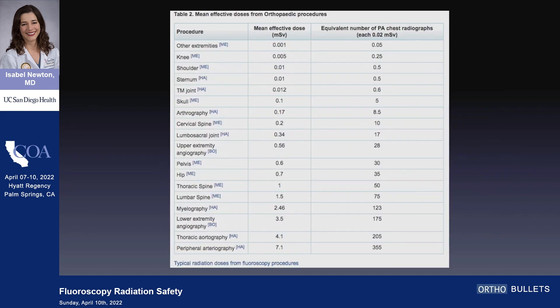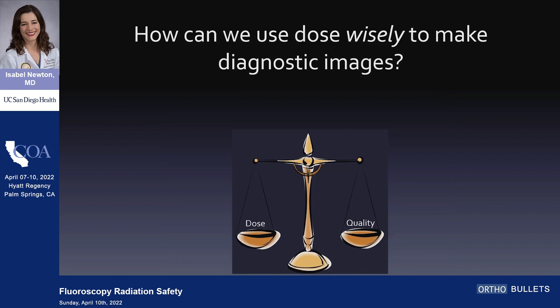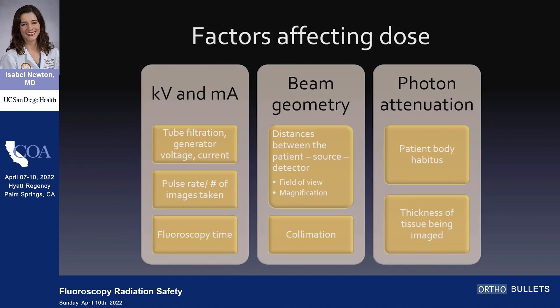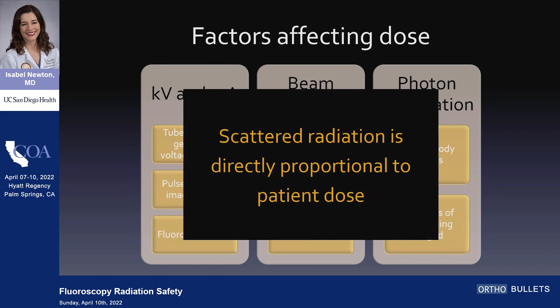Here are some radiation doses for common procedures that you do. You are exposed to far less radiation than we are in IR. That doesn't mean you should be far less concerned. We're going to try to use this dose wisely to make diagnostic — not gorgeous — images. To summarize, the factors that affect dose are the energy of the beam and the number of photons, the beam geometry (how close you have the patient to the source versus the detector), and the attenuation of the beam by your patient. Remember: scattered radiation is proportionate to the dose to the patient, so ALARA helps all of us.